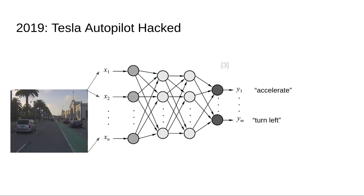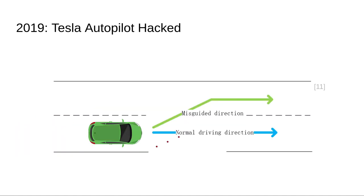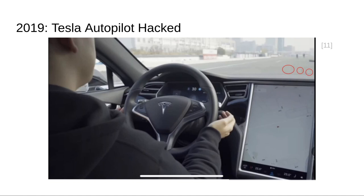For the last demonstration today, we have the 2019 Tesla autopilot attack. Quick reminder on autonomous driving: the camera image from the car is fed into a neural network, and then the neural network decides what to do — accelerate, turn left, and other possibilities. This can also be attacked. Researchers in 2019 figured out that if they print small white dots on the lanes, then the car thinks the lane is ending there and turns left. Which is usually not what you want. This is how it looks when you are in the car — the dots are rather small.